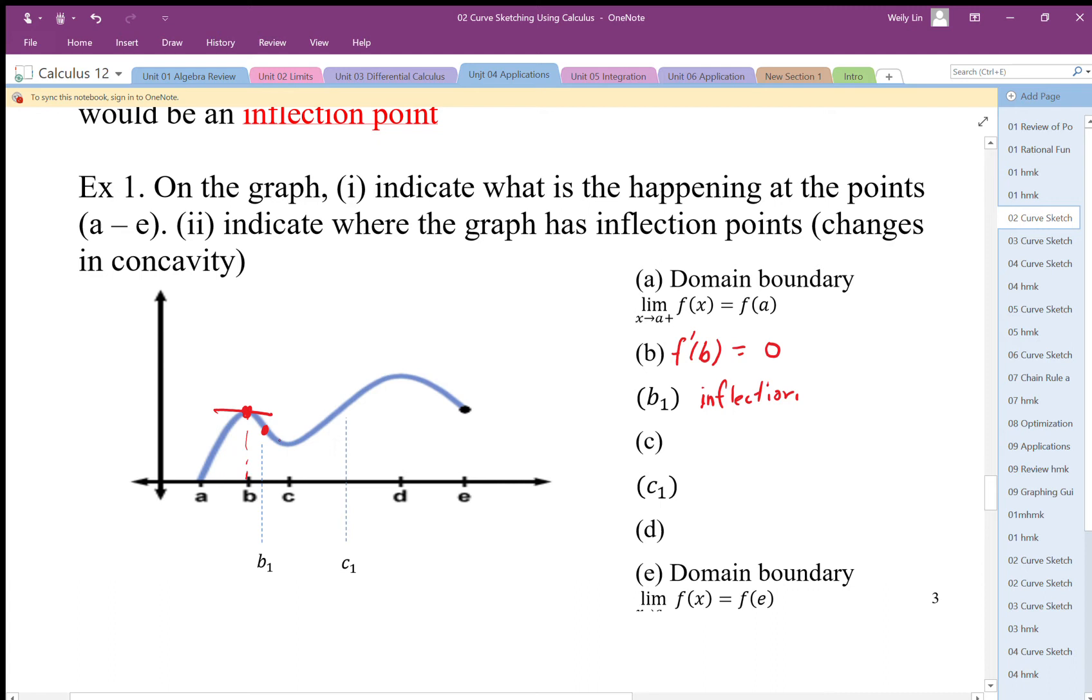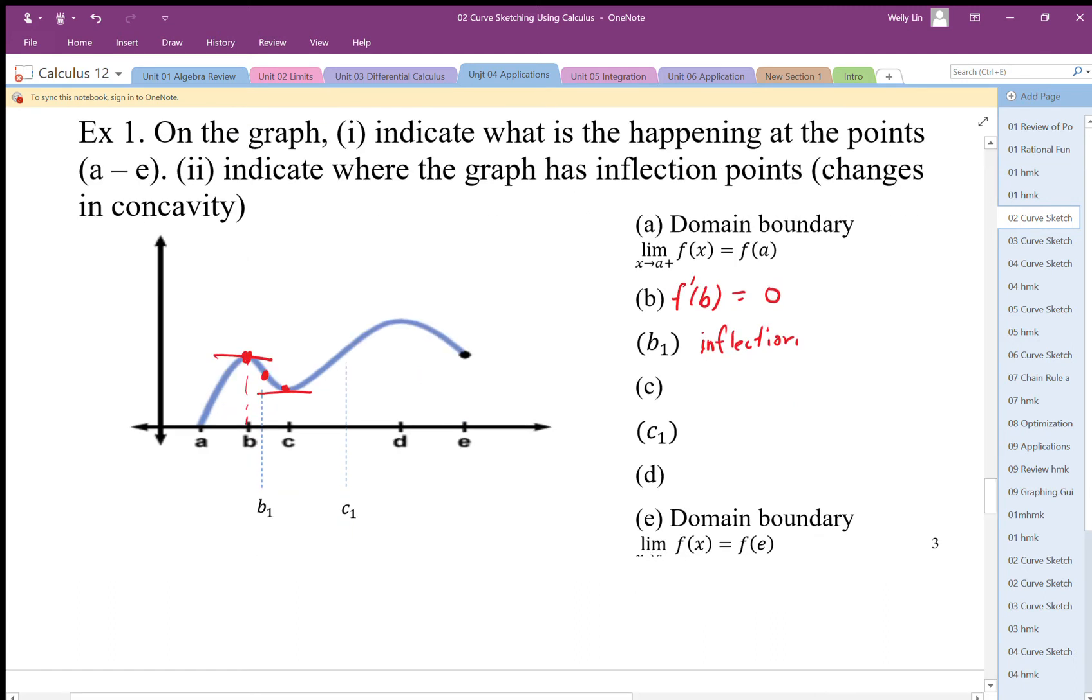Point c is a minimum, hence it's got zero slope, so f prime of c is equal to zero. It happens to be a min. This point c1 is an inflection point again—it changes from concave up to concave down.